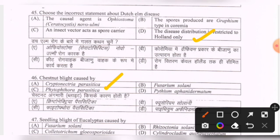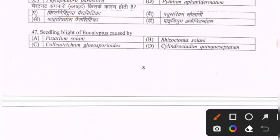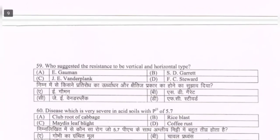Final question: seedling blight of eucalyptus is caused by — options are Fusarium solani, Rhizoctonia solani, Colletotrichum gloeosporioides, Cylindrocladium quinqueseptatum. The correct option is the fourth one — Cylindrocladium quinqueseptatum.